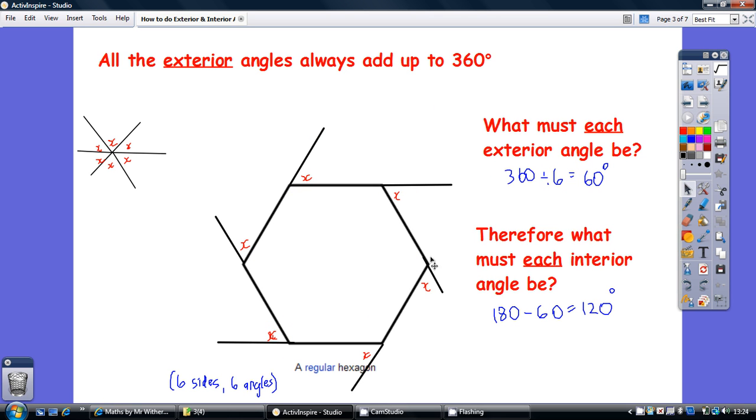Now just looking at the exterior angles here, imagine shrinking this hexagon so it almost becomes a dot. All of the exterior angles together, think about them, they all basically are all angles about a point. So all the exterior angles together total 360.